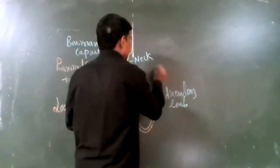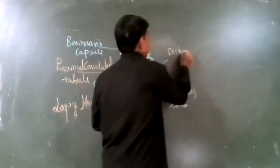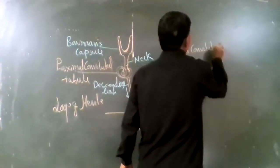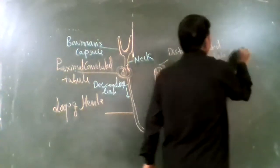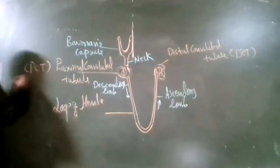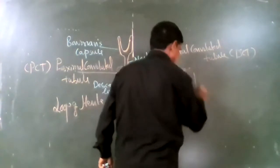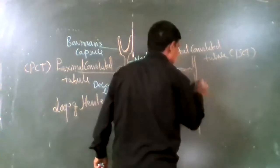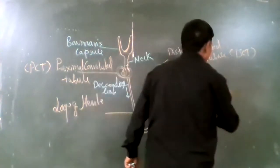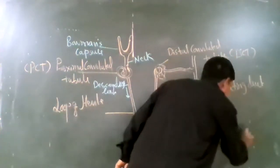The ascending limb again gets coiled and this is called the distal convoluted tubule, also known as DCT. The proximal part is called PCT, proximal convoluted tubule. The distal convoluted tubule is connected with the collecting duct, and many collecting ducts open into the duct of Bellini.